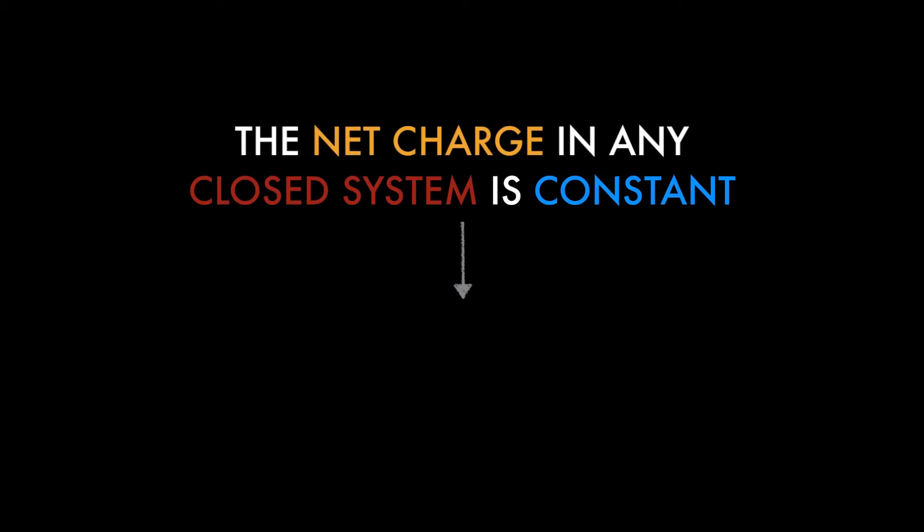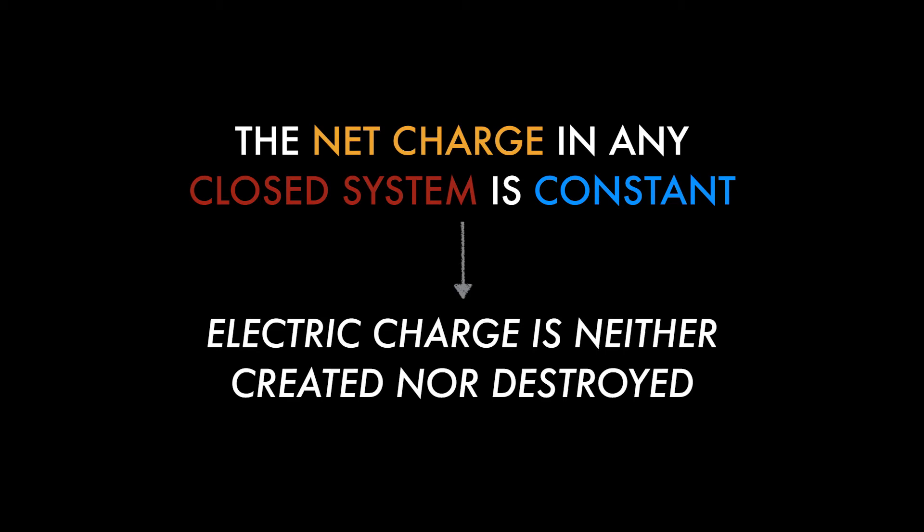From this we can say that electric charge is neither created nor destroyed in a closed system. Whatever electric charge I have at the start will be the same at the end. Looking back at the example, you could argue that I created a negative charge in the balloon, but with that negative charge came a positive charge in my hair — the net charge of the system remained unchanged. Every time you create a negative charge, some positive charge must also be created, and vice versa.